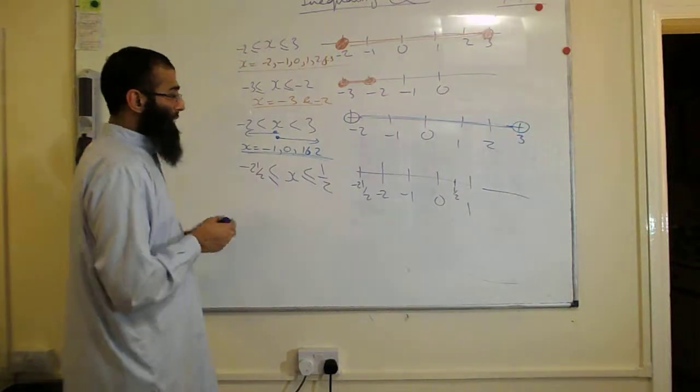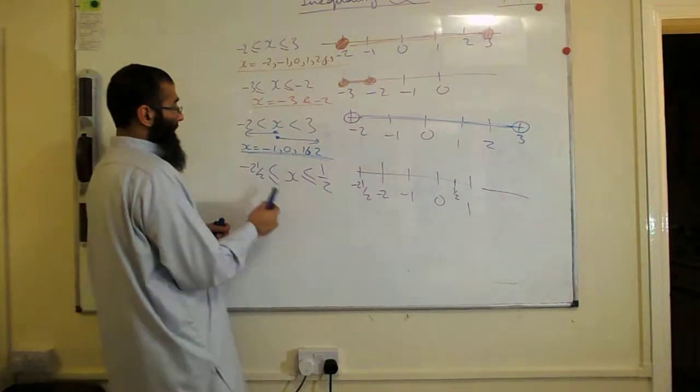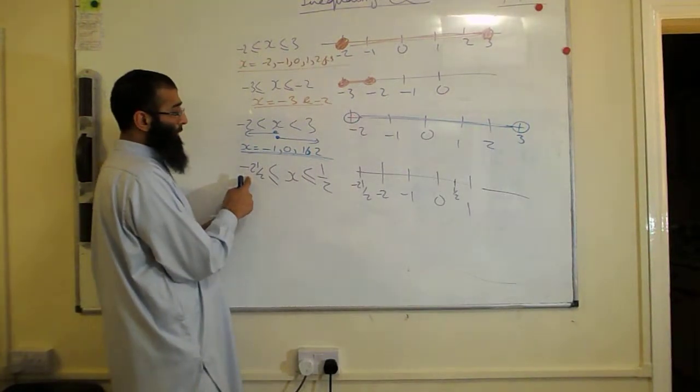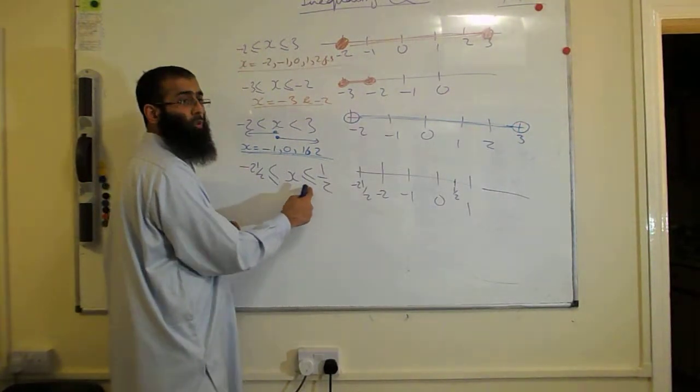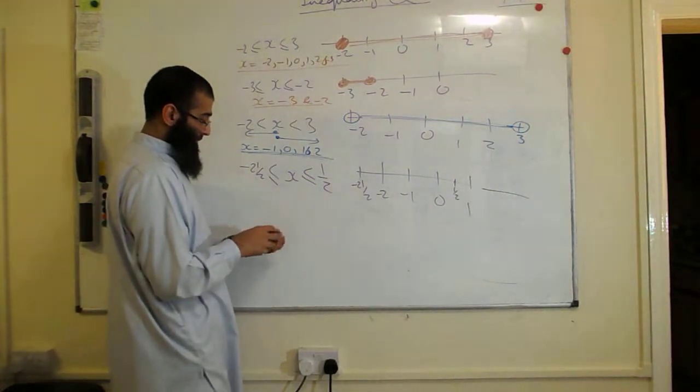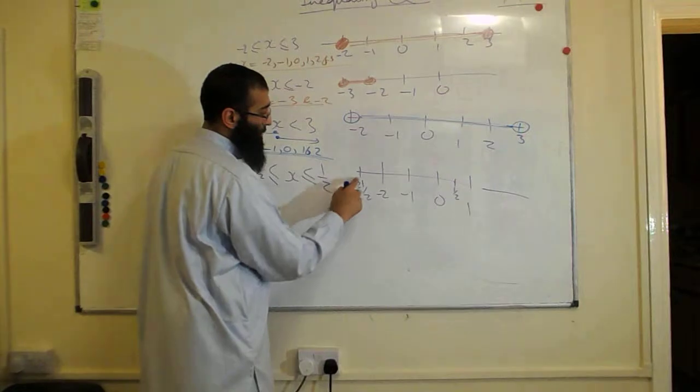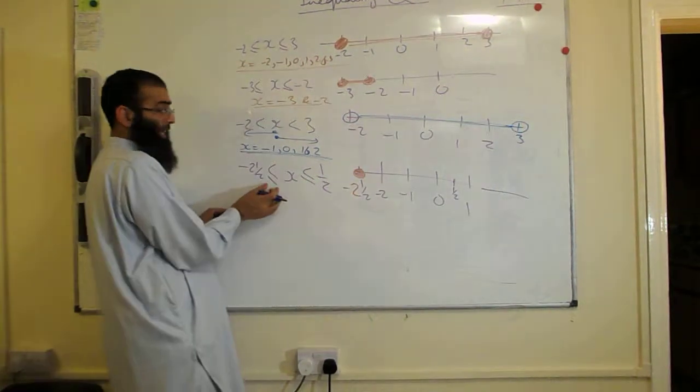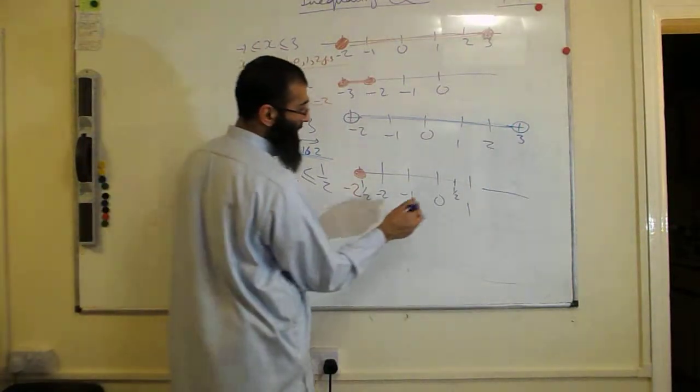Okay, the last question. Here we have X is greater than or equal to minus 2 and a half, but X must be less than or equal to a half. So you've got both equals, we should have solid ones for that. Here's minus 2 and a half, so this will be solid here because it's equal. And a half is over here, and that's solid because that's equal as well. So it's going to be joining these two together.